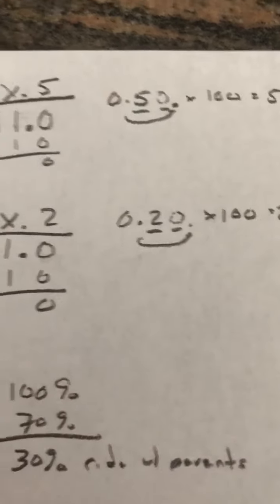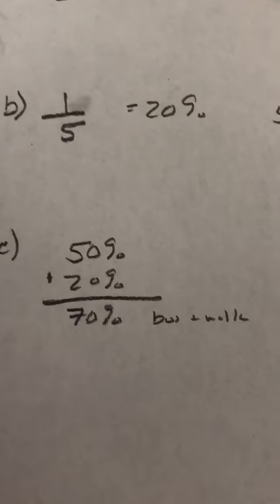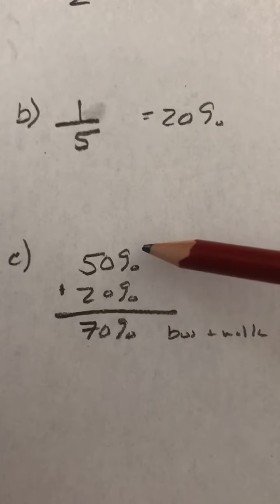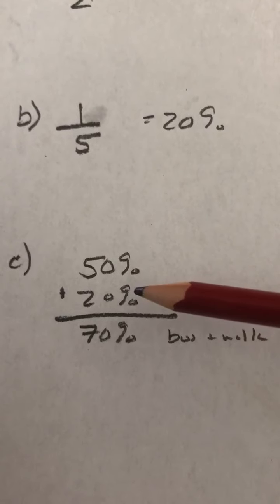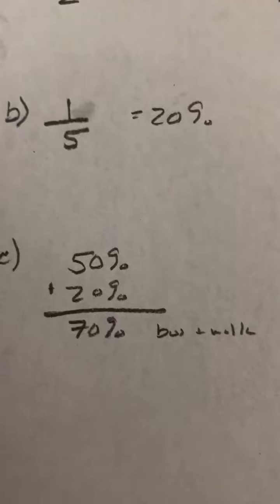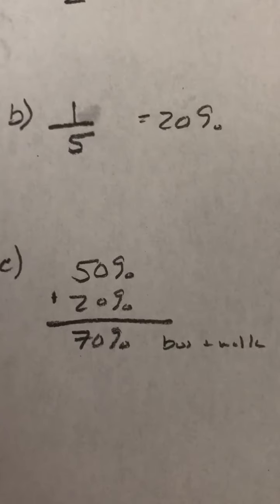Now, the last part was what percent of the students ride with parents. In this case, we know now what percent of students take the bus and what percent of the students walk. So 50% take the bus, 20% walk. So a total of 70% take the bus or walk.